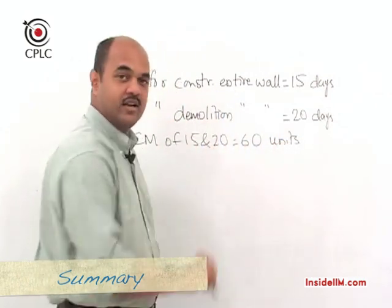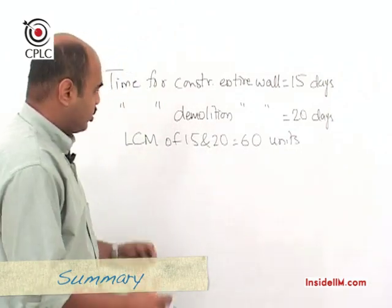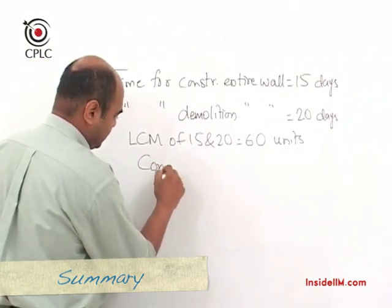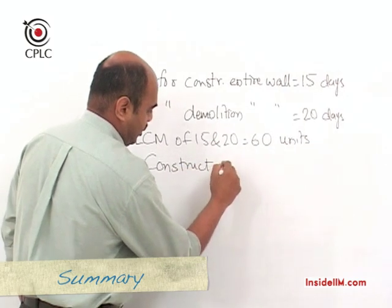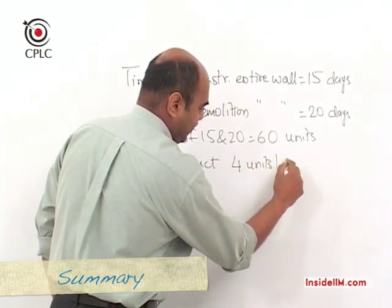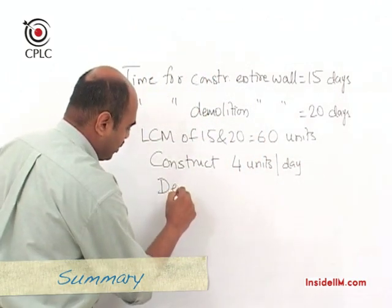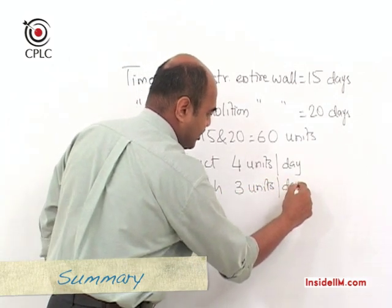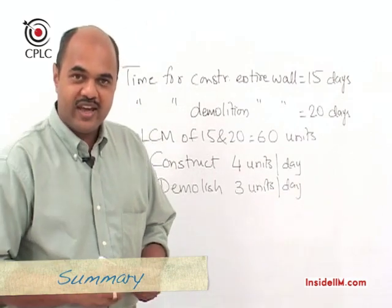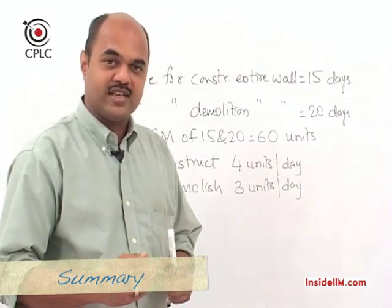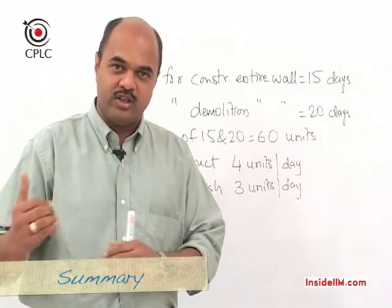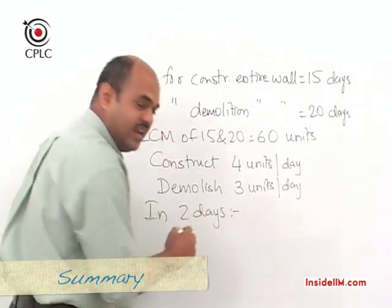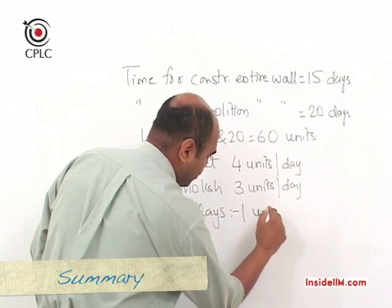Taking the LCM of 15 and 20, suppose the total work is 60 units. This means the builder constructs 4 units per day, and the demolishers demolish 3 units per day. So on day one, 4 units are built; on day two, 3 units are demolished. In 2 days, the net work done is 1 unit.